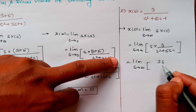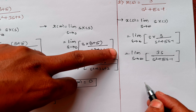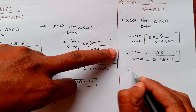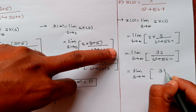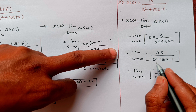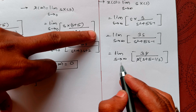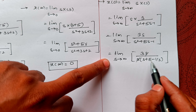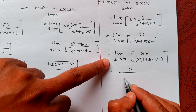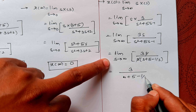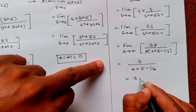The numerator becomes 3s and the denominator is s²+5s−1. If we take s as common from the denominator, the equation becomes 3s / (s × (s + 5 − 1/s)), then s cancels. Substituting the limit as s tends to infinity we get 3 / (∞ + 5 − 1/∞). Since infinity plus anything is infinity, we get 3/∞.